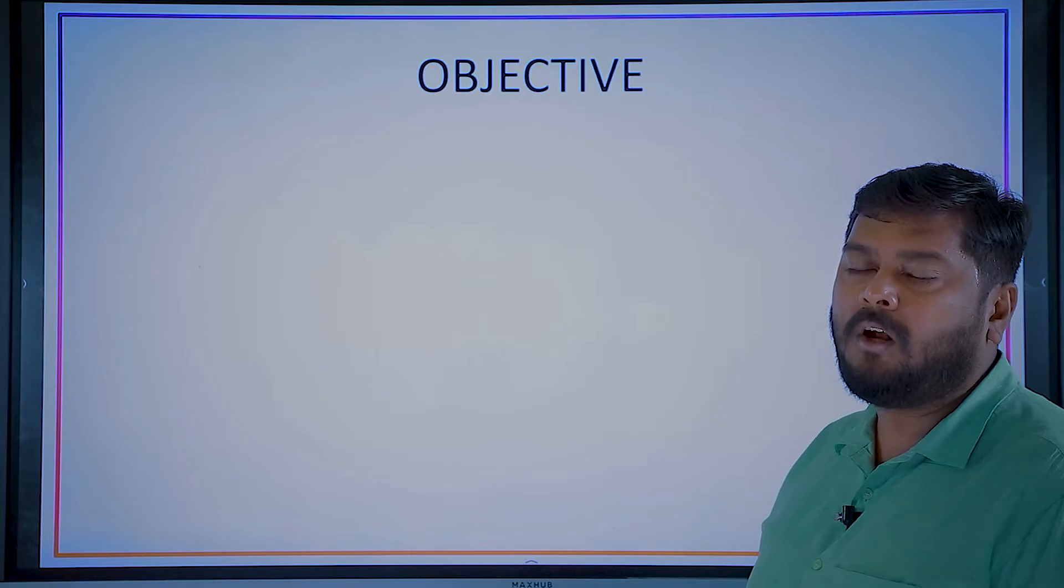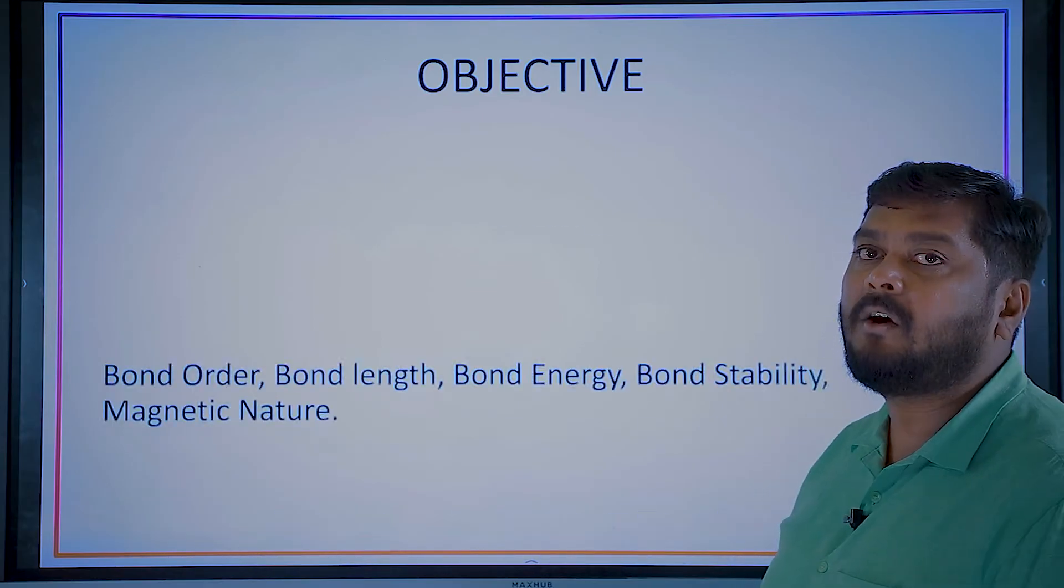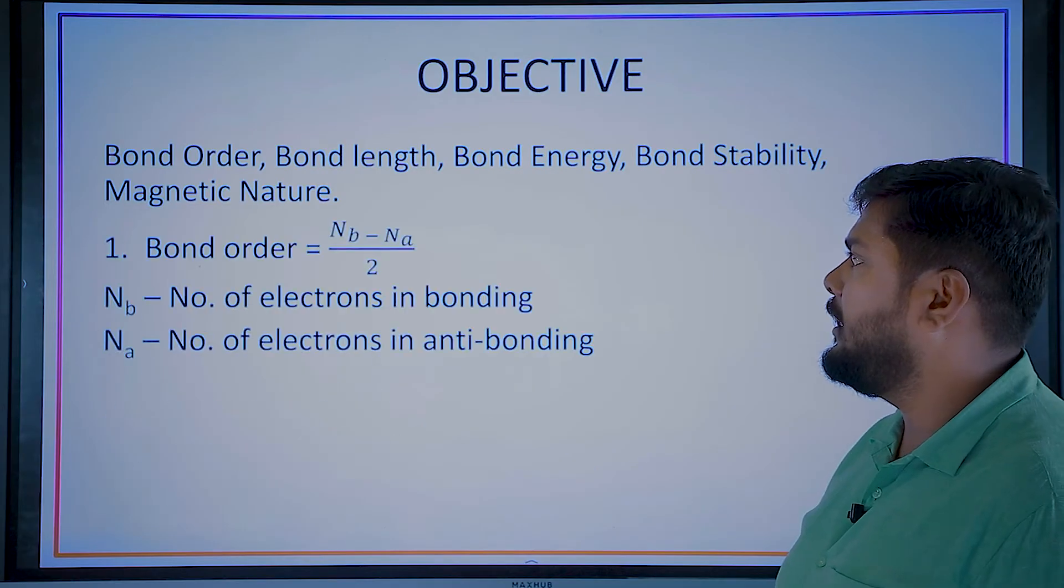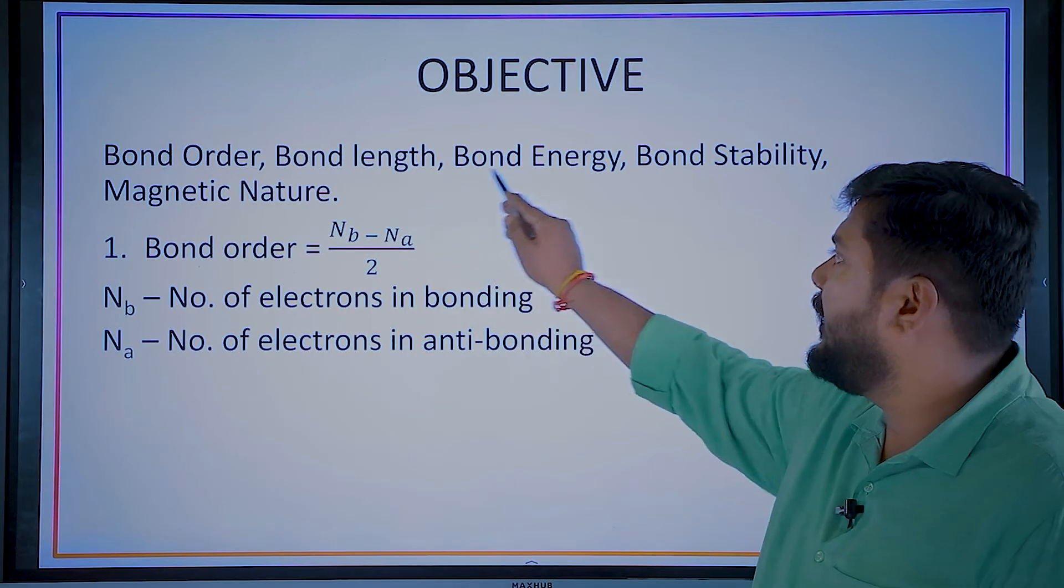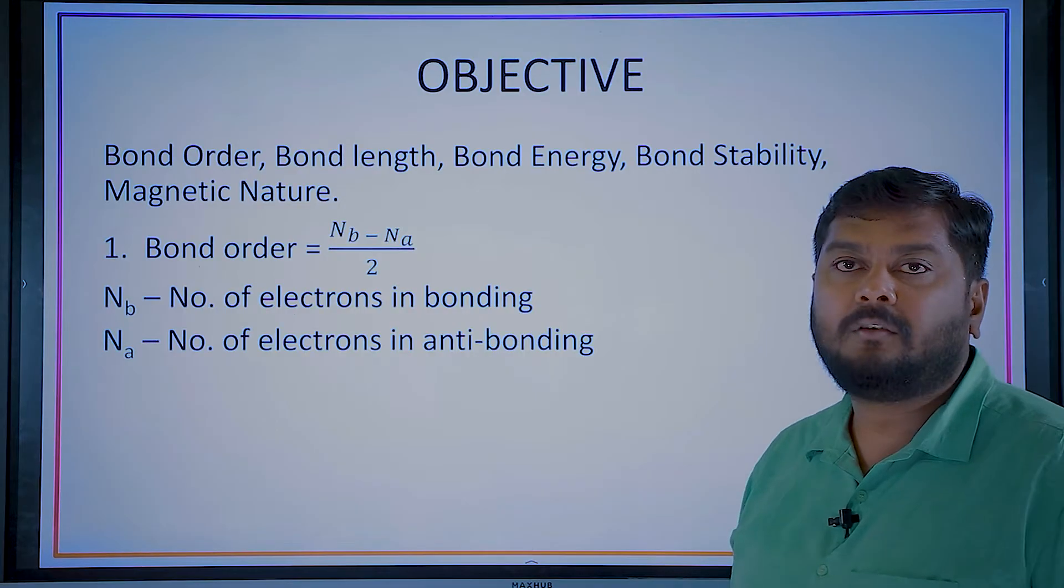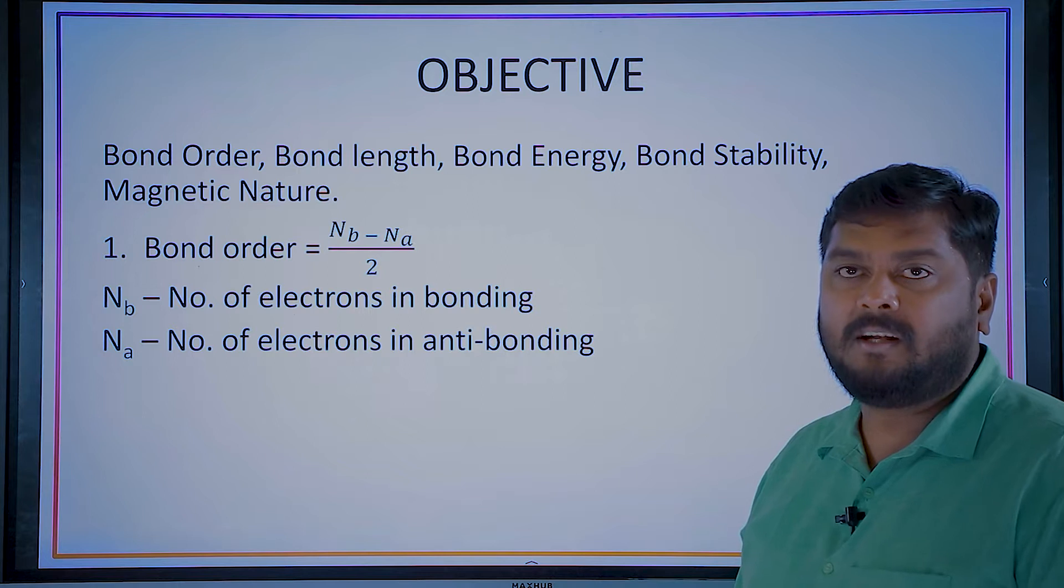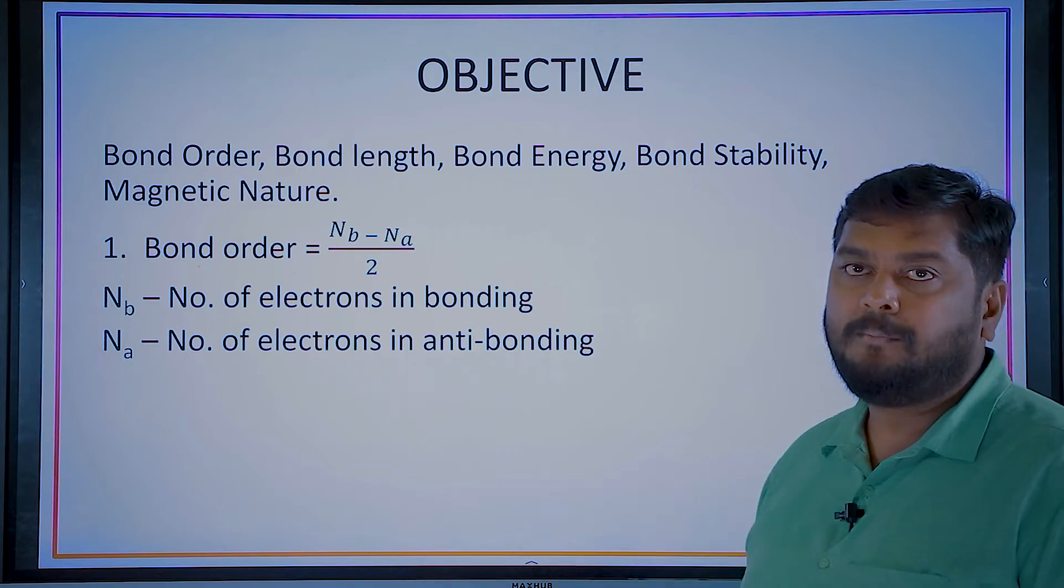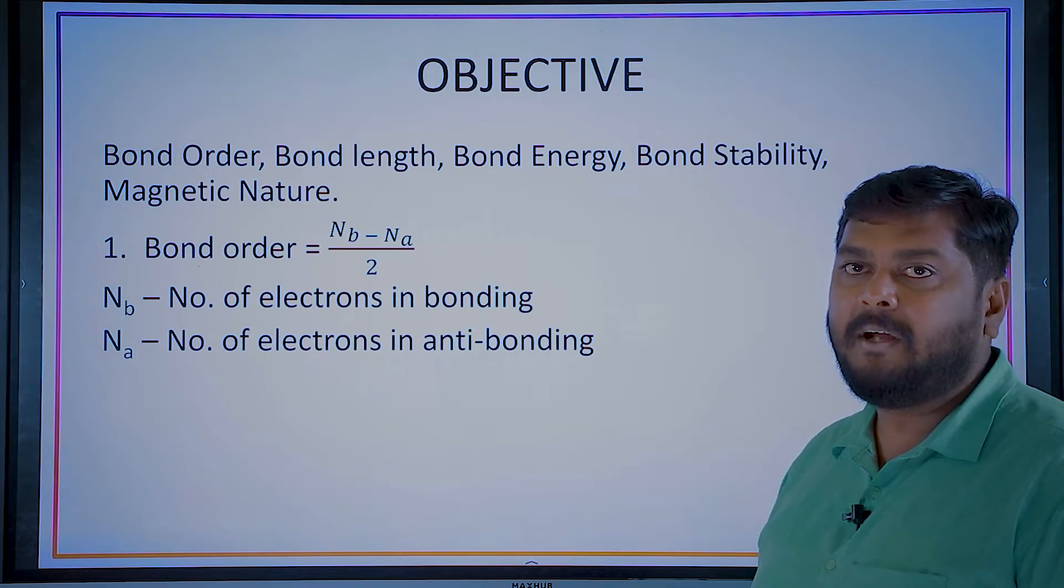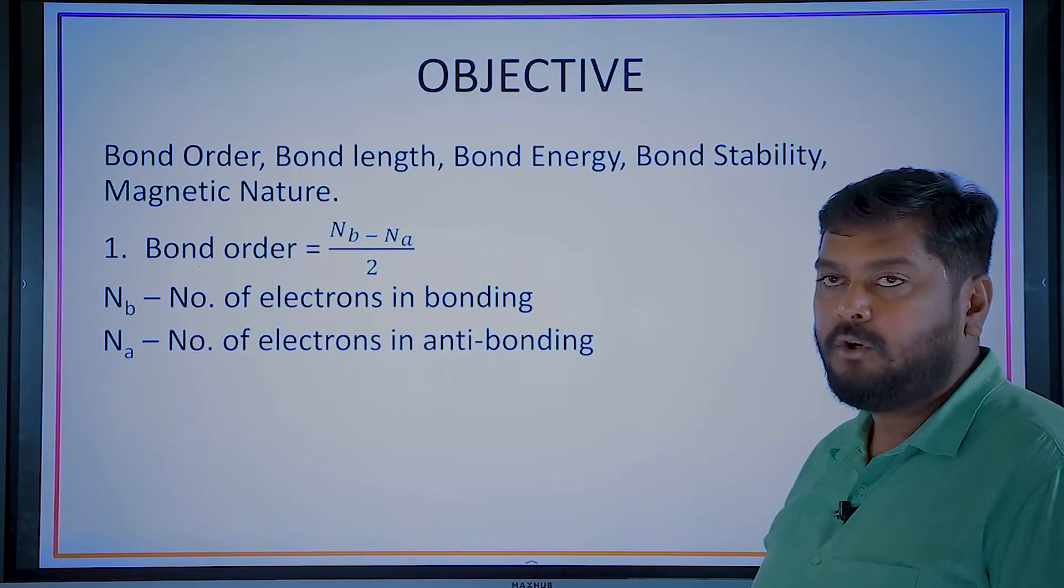So what are the objectives of this molecular orbital theory? Bond order, bond length, bond energy, bond stability, magnetic nature. Bond order prediction formula: number of electrons in bonding minus number of electrons in anti-bonding divided by 2. That is given as Nb minus Na divided by 2.